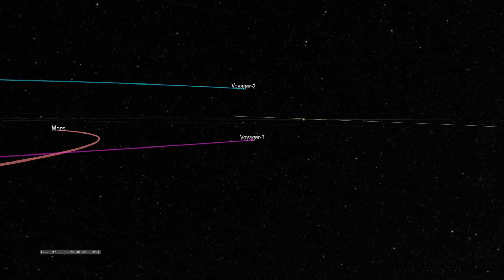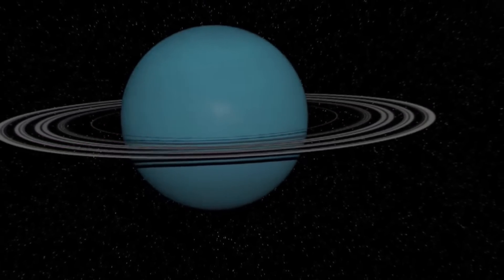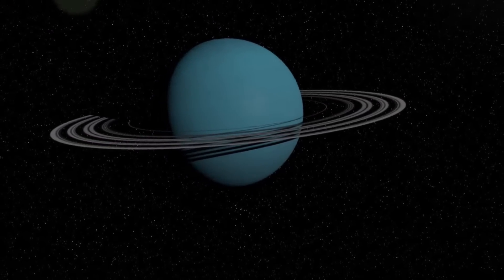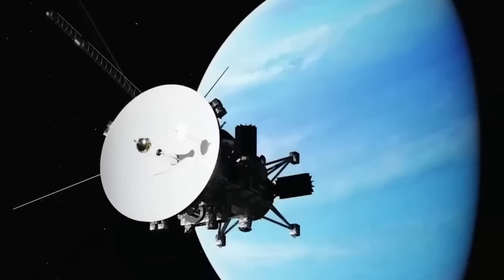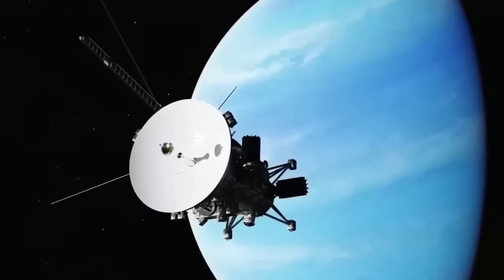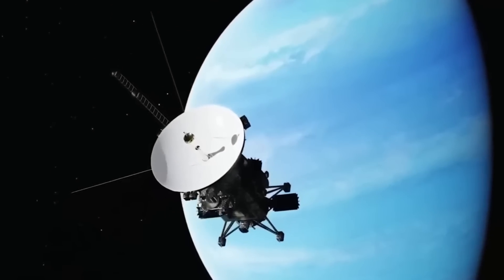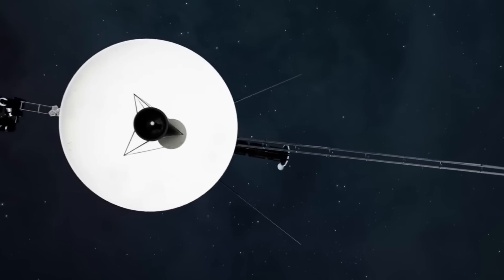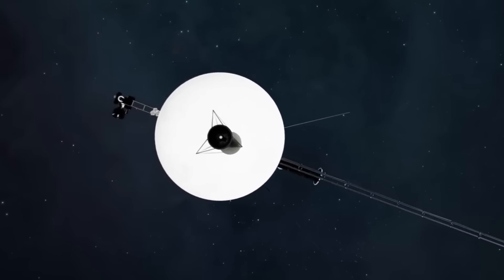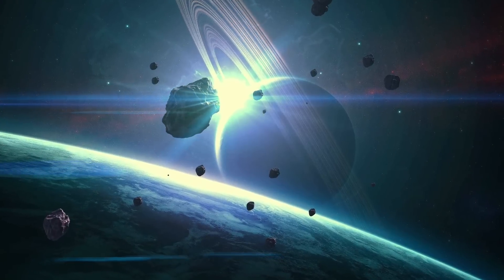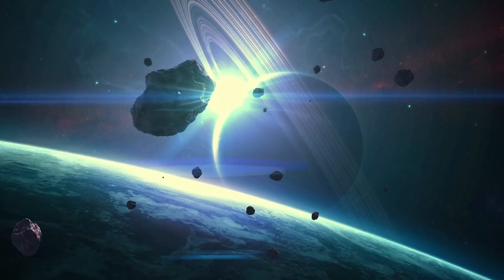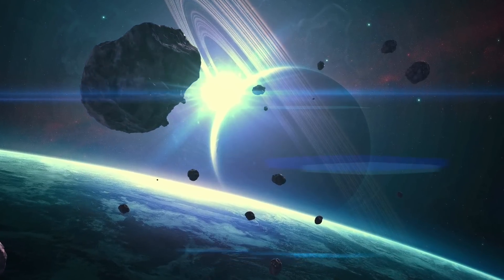Voyager 2's journey took it to Uranus, the enigmatic ice giant, in January 1986. The spacecraft made stunning discoveries, capturing images that revealed never-before-seen features of Uranus and its moons. Voyager 2 discovered two new rings around Uranus, bringing the total to 13, and detected 11 previously unknown moons.